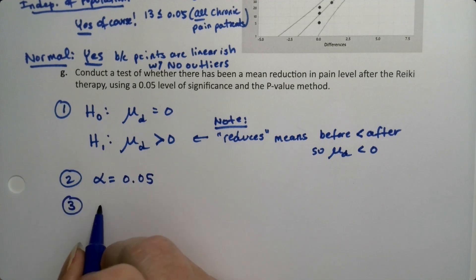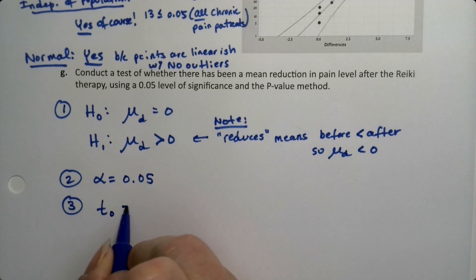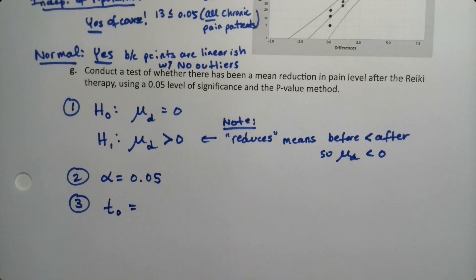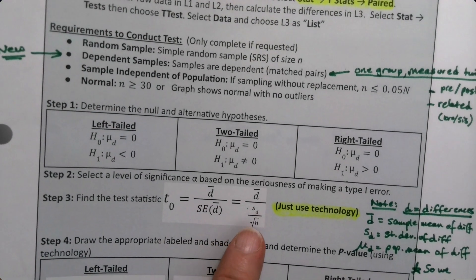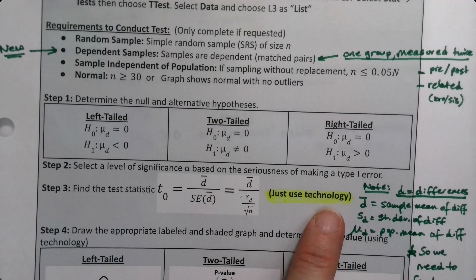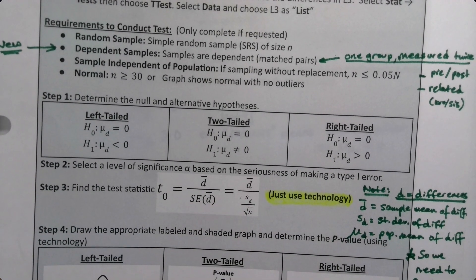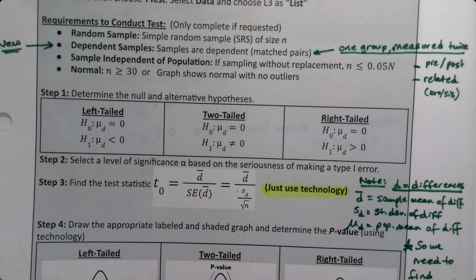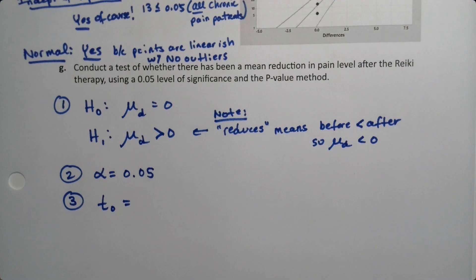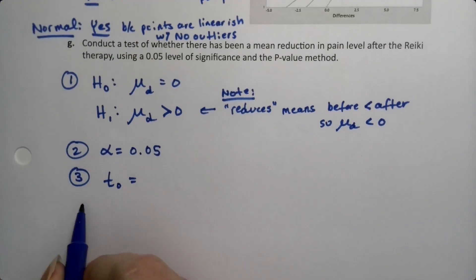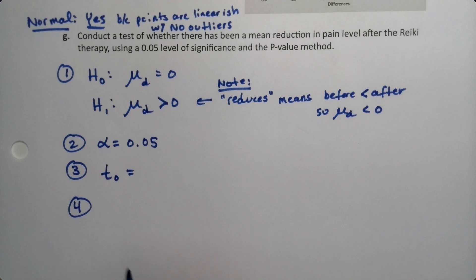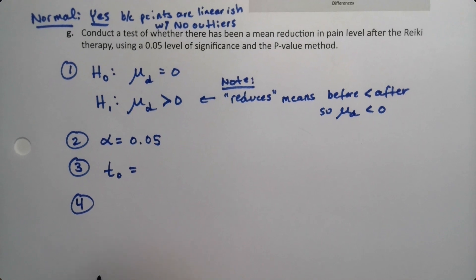Step three is T0. Now there is a formula for it but we're not going to do it. We're just going to use technology in chapter 11. Technically this one's easier to do than 11.1 and 11.3, but nevertheless just to keep things consistent, we'll make technology do that and make technology do step four for us as well.